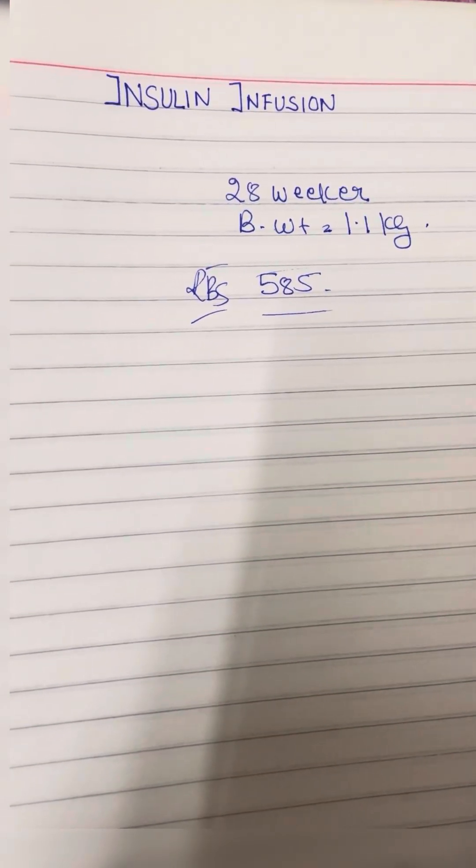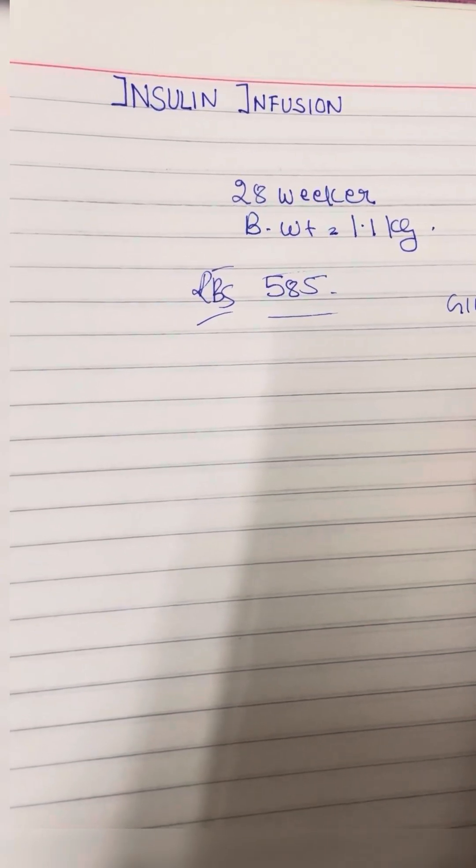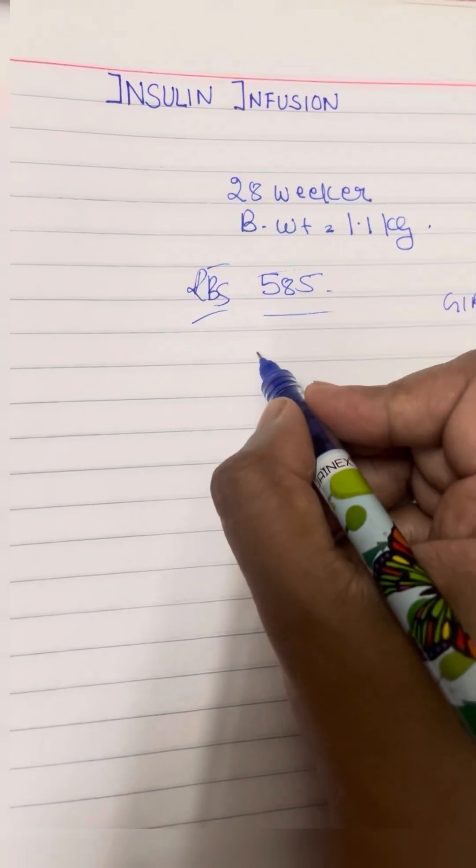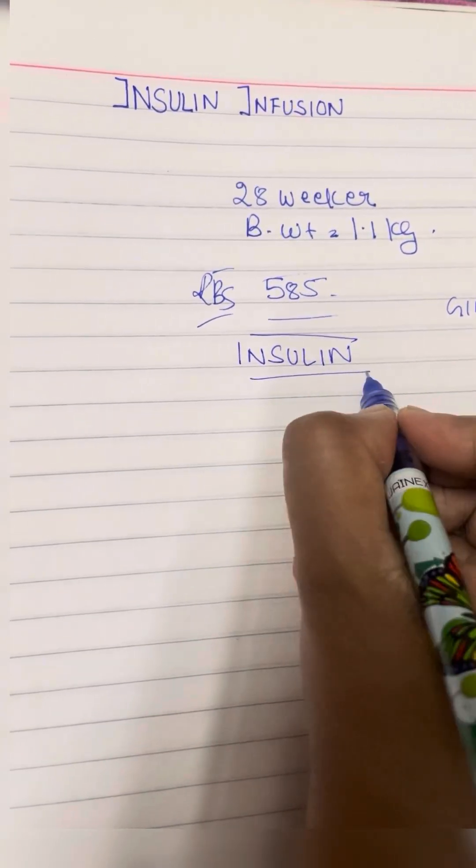Suppose the sugar is not coming down. You have reduced the GIR to the minimum, bare minimum GIR of 4 mg per kg per minute, but it's not coming down. Now you plan to start with insulin.